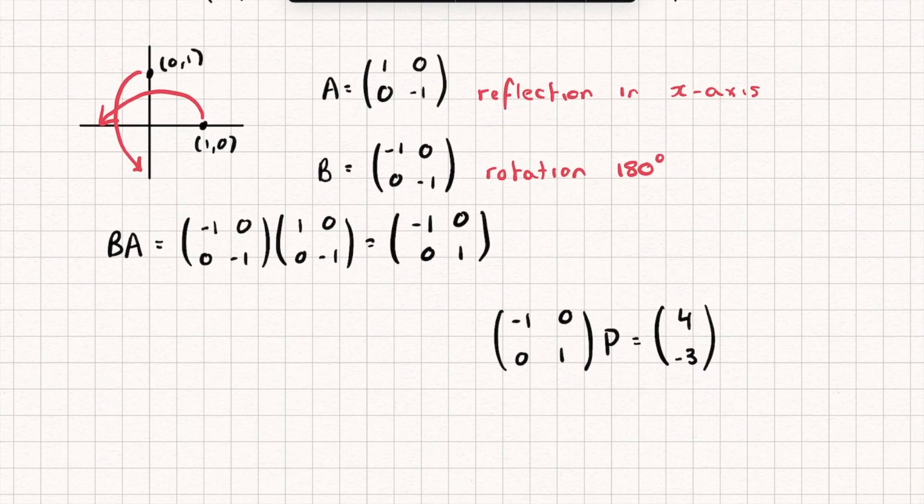Now all I need to do is find the inverse of this matrix here and then I'm going to multiply both sides of this equation on the left by that and I'm going to just find that inverse and we actually find that the inverse to this matrix is the matrix itself. So I'm going to multiply both sides on the left by this matrix again.